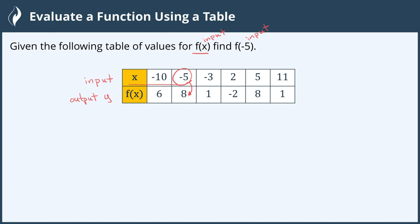So using this table we know that the function at negative 5 gives us an output of 8. We've now evaluated a function using a table and we're all done.